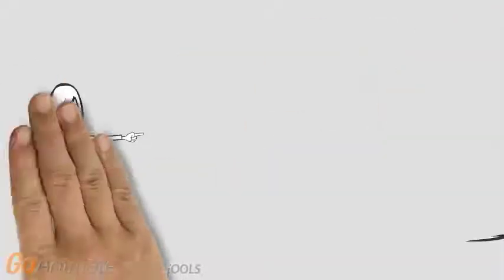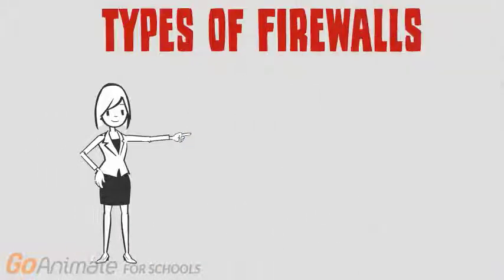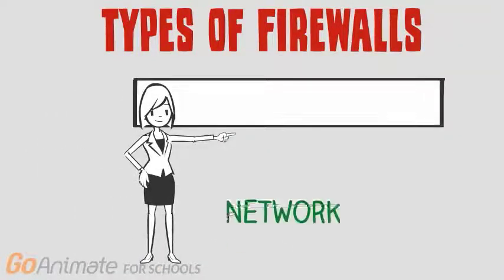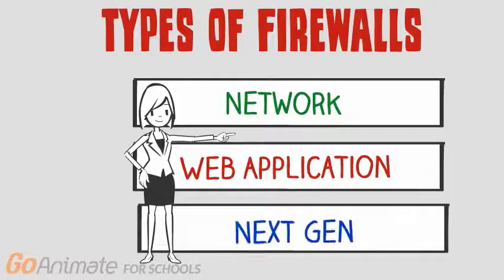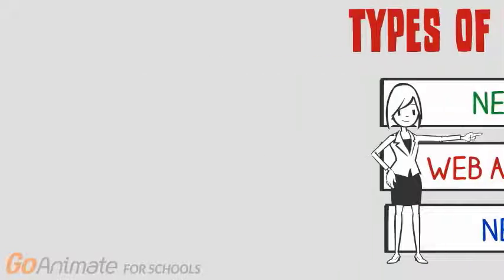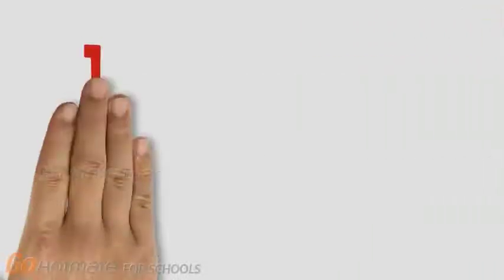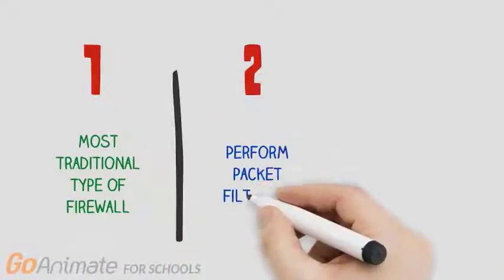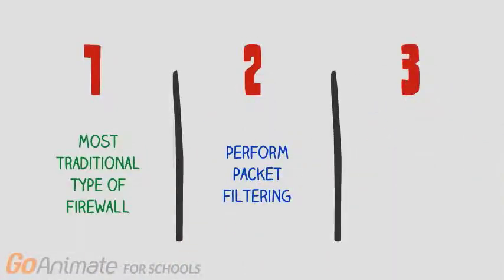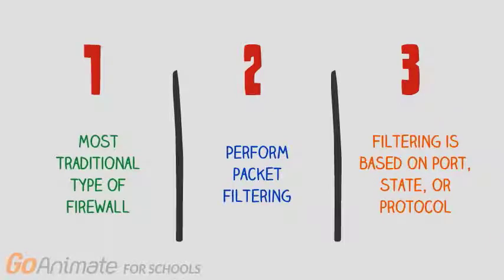There are three main types of firewalls: network firewalls, web application firewalls, and next-gen firewalls. Each have their own unique capabilities and uses and there is no one-size-fits-all solution for your firewall needs. A network firewall is the most traditional firewall and filters traffic based on network traffic rules which regulate ports, states, and protocols. This is called basic packet inspection and is a fast and efficient way to catch most undesired packets.